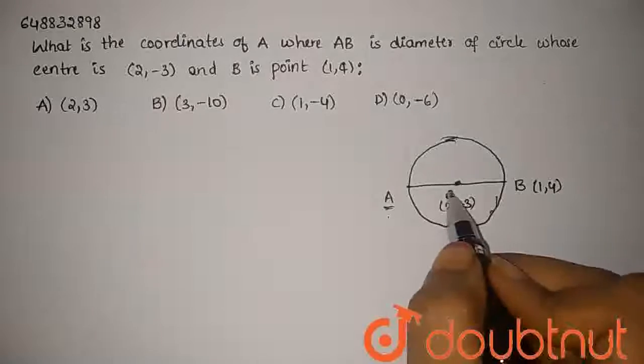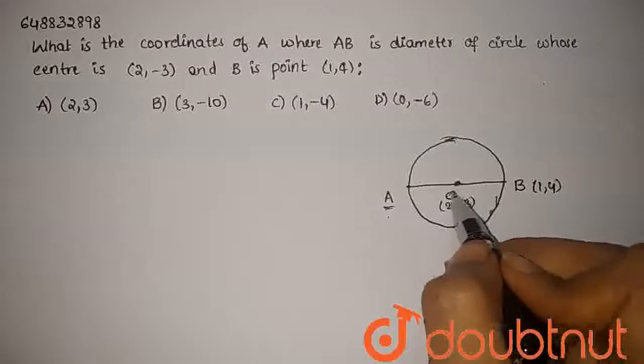This diameter, the center is 2,3 and B is 1,4. We can say that this diameter is AB, and C is the center of circle.